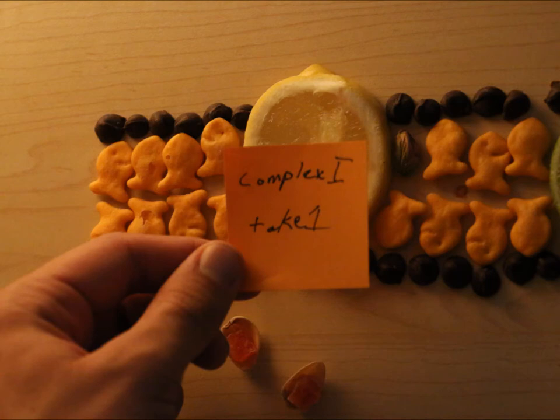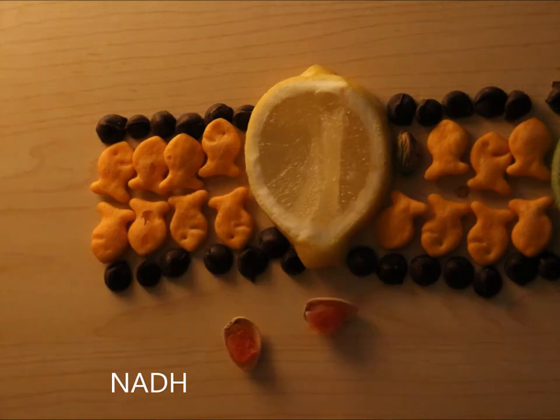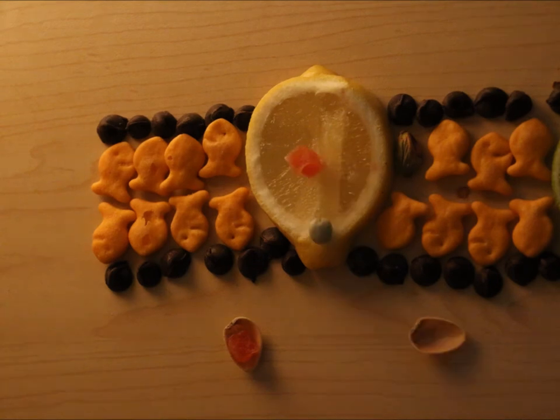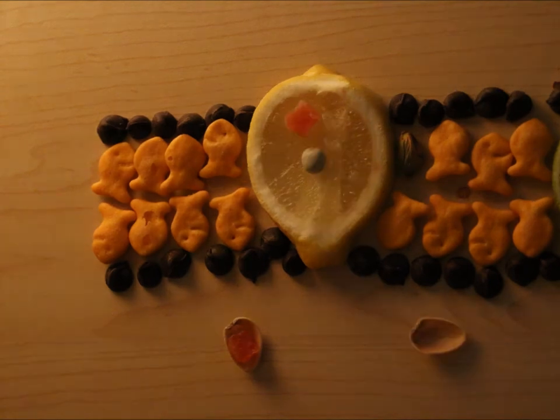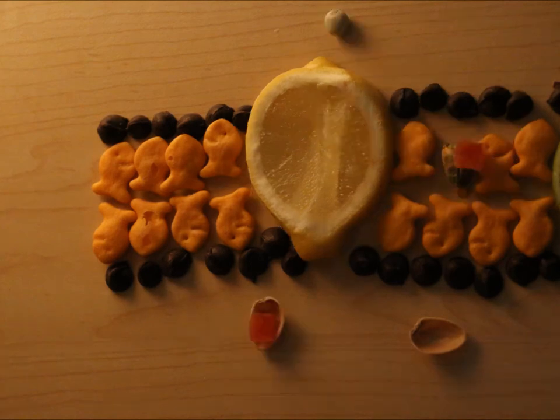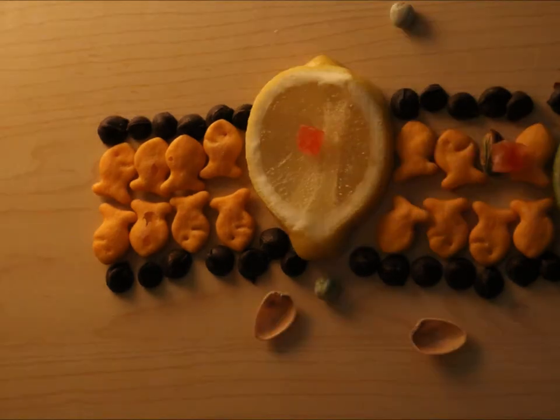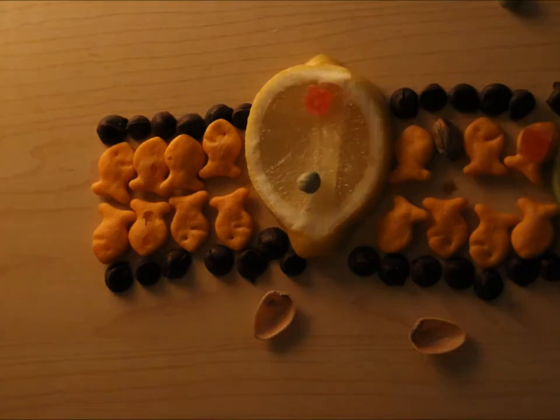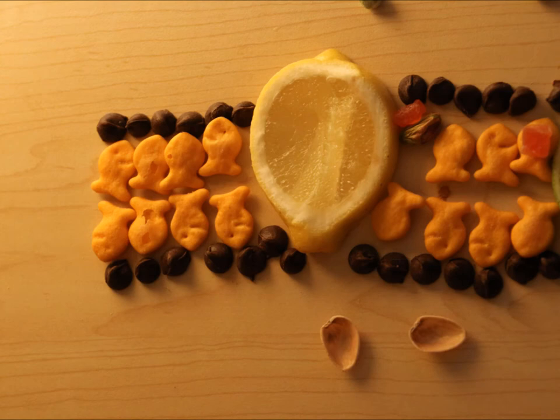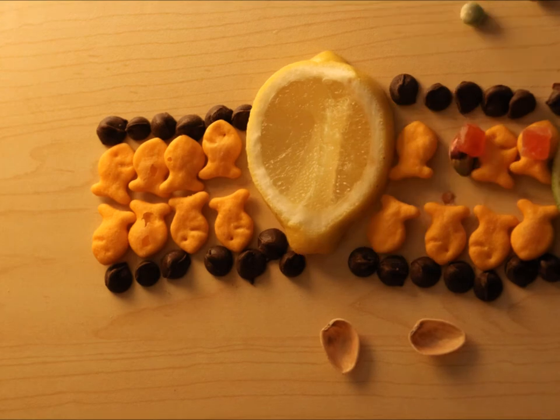Pictured here is complex 1. The pistachios represent NAD or FAD. The orange fruit represents the electron. Notice how the electron moves into complex 1 and then onto ubiquinone, pictured here as the pistachio. This pumps hydrogen molecules up into the inner membrane space. This process oxidizes NAD and reduces ubiquinone.